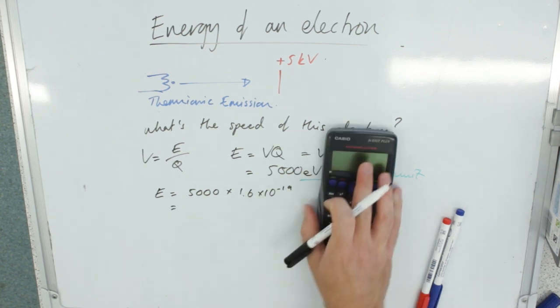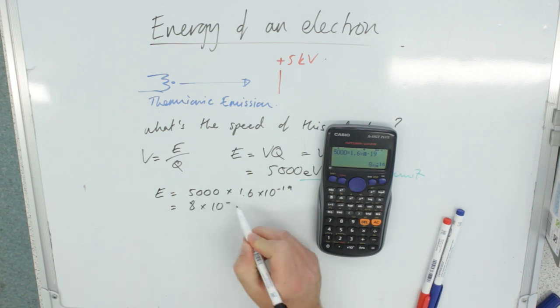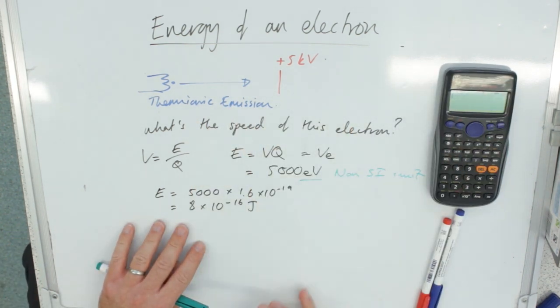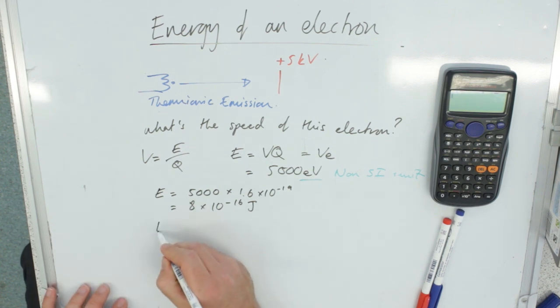So we're saying that's been given to the electron as kinetic energy. And EK is just half mv squared. So this, 8 times 10 to the minus 16, is half mv squared.